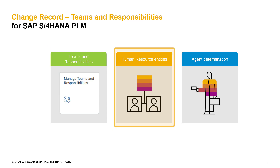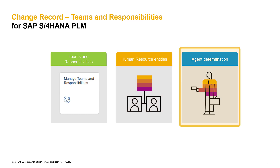The second option to define team responsibilities in a process route is via the classical human resource entities. Here you can assign users to positions as well as to organization structures. These positions and organization units can then be selected in the process route of our change record. How these selections of the different teams and agents work, I will show you on the last point.